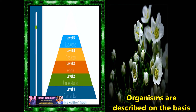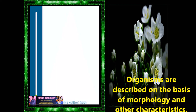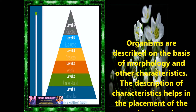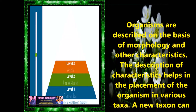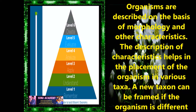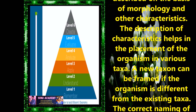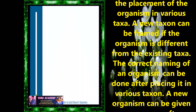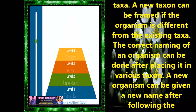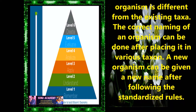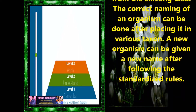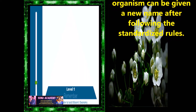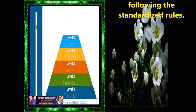Children, now let us study the basic process of taxonomic studies. Organisms are described on the basis of morphology and other characteristics. The description of characteristics helps in the placement of the organisms in various taxa. A new taxon can be framed if the organism is different from the existing taxa. The correct naming of an organism can be done after placing it in various taxon. A new organism can be given a new name after following the standardized rules.